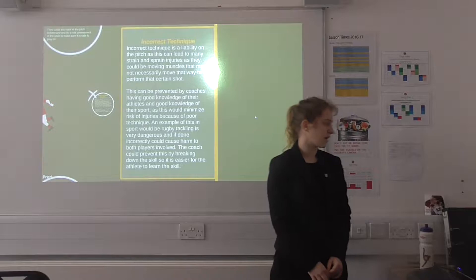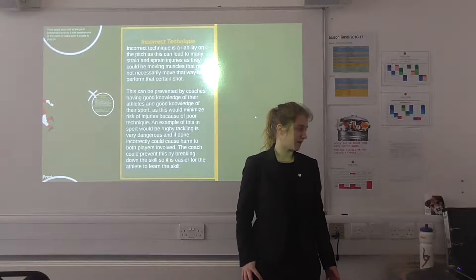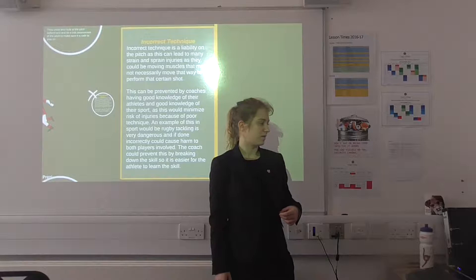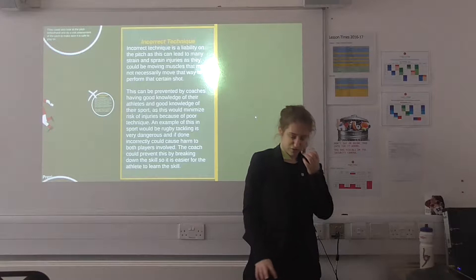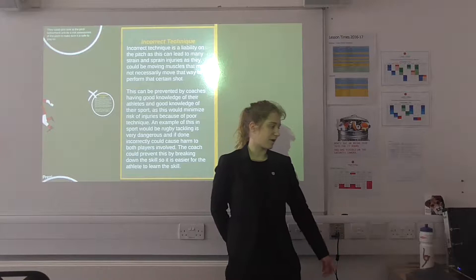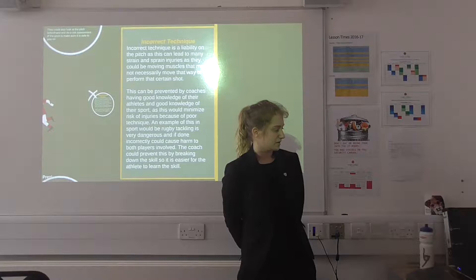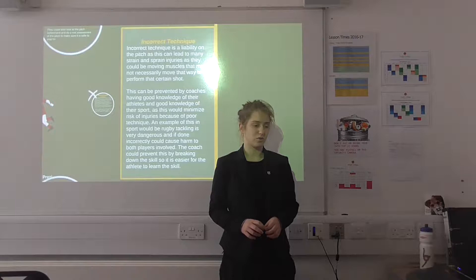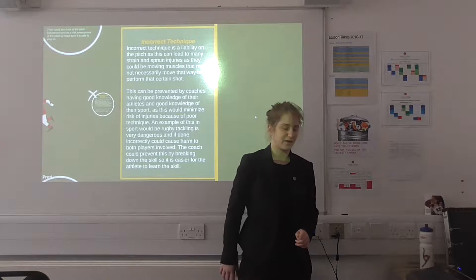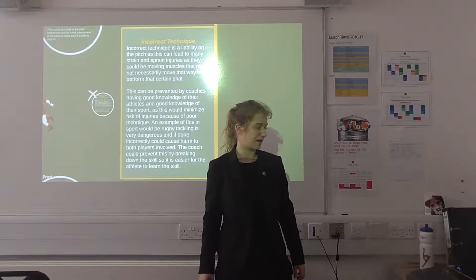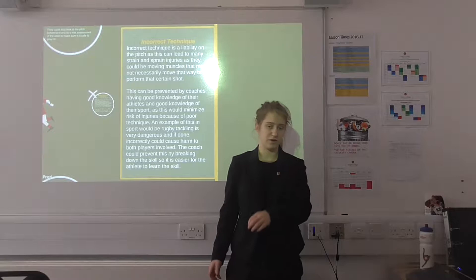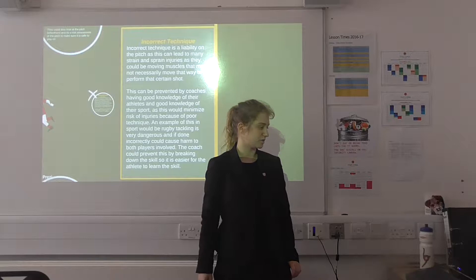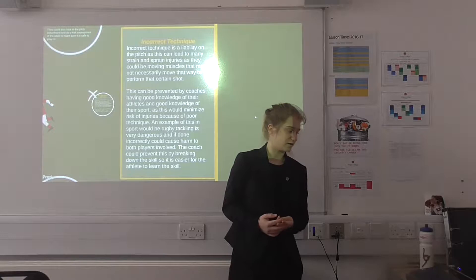Incorrect technique is a liability on the pitch, as it can lead to strain and sprain injuries or even concussions. Strains and sprains could come from athletes moving muscles in ways they shouldn't to perform a certain skill. This can be prevented by coaches having good knowledge of their sport and athletes, watching the athlete closely to check technique. An example in sport would be tackling in rugby — it is very dangerous and an athlete could put their head on the wrong side and get kneed in the head, causing a concussion. The coach can prevent this by teaching the correct technique and watching players while tackling.